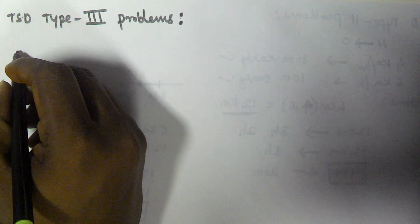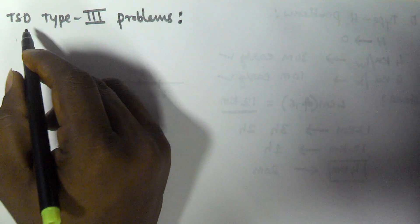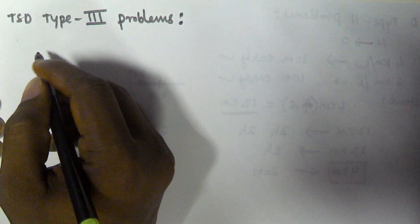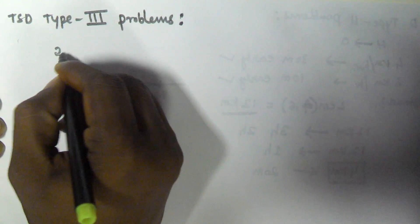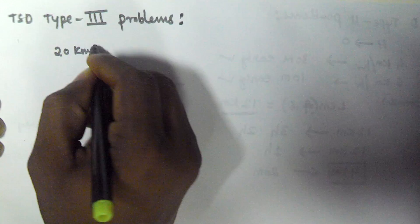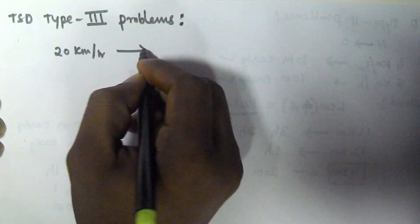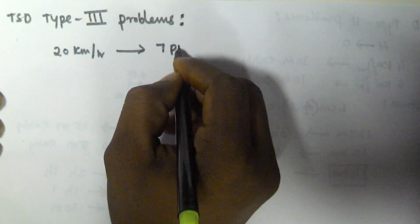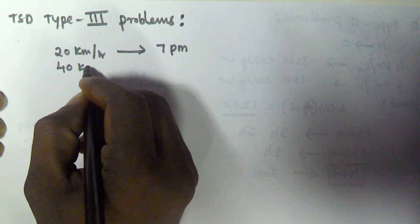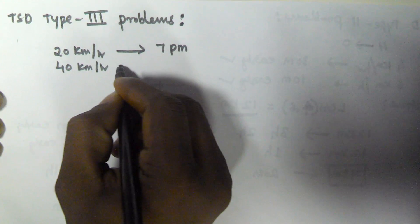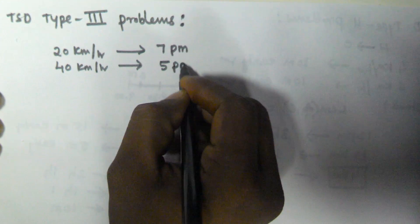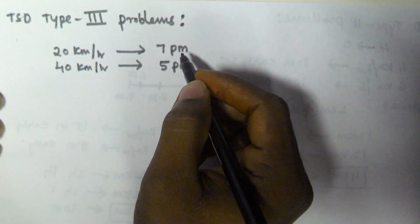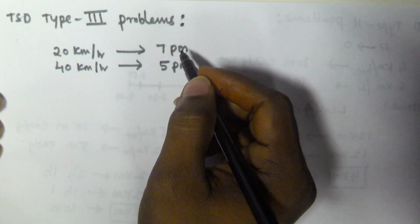Hello friends. In this video we will see the Type 3 problems of time, speed, and distance. Let us assume a person is travelling from his home to office. On the first day he travelled with 20 kmph and reached the office at 7 pm. On the second day he travelled with 40 kmph and reached the office at 5 pm. Find the distance between his home and office.